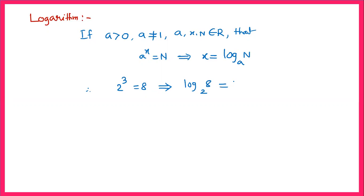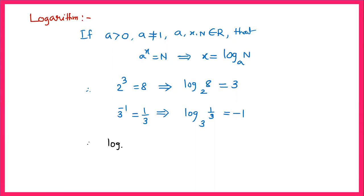Similarly, 3 power minus 1, which we know is 1 by 3. So logarithm of 1 by 3 to the base 3 will be equal to minus 1. So we changed exponents into logarithm. Now let us try to change in reverse order: suppose log 64 to the base 2 is equal to 6.